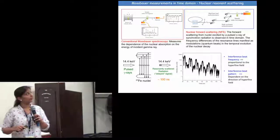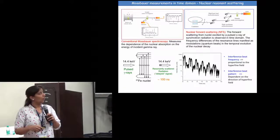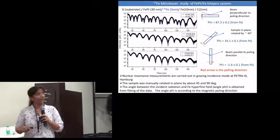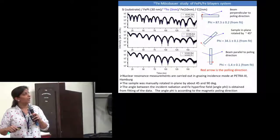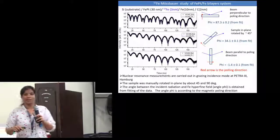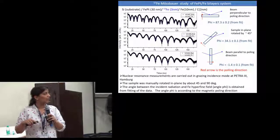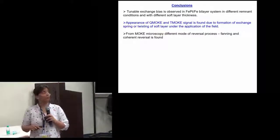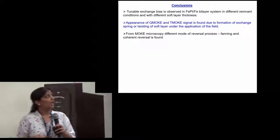Now discussing the NRS (Nuclear Resonance Scattering) measurement results. We obtained a beat-like pattern as explained in a previous talk. In this bilayer, saturated at 2.7 tesla, we rotated the sample in the biasing condition. From the fitting we determined that it has a certain angle, showing that the iron layer is exchange-coupled with the hard layer, and that the iron has a unidirectional anisotropy.